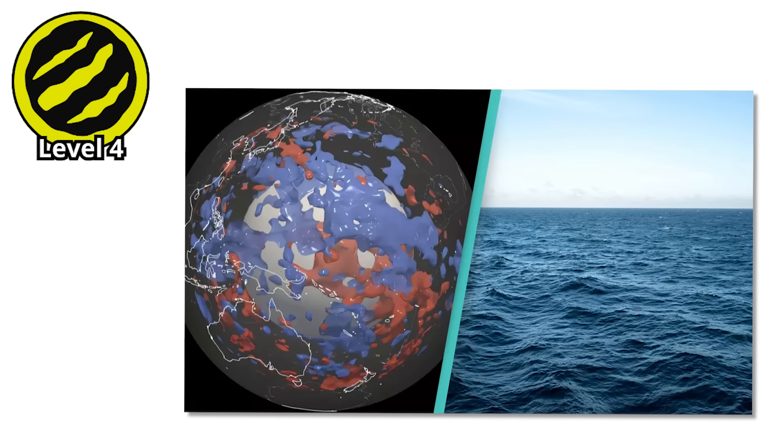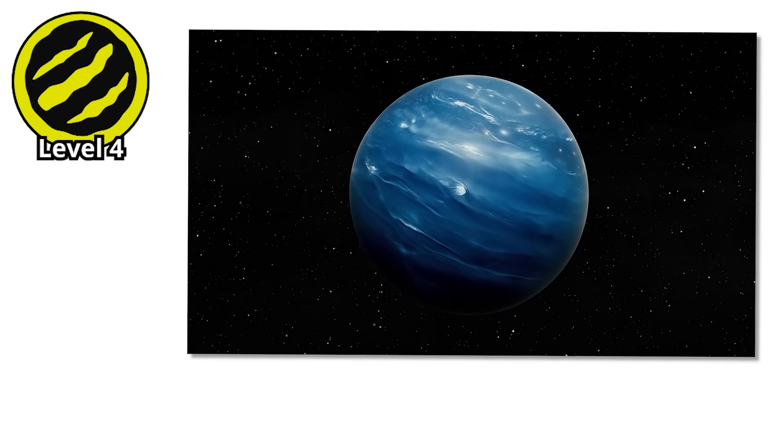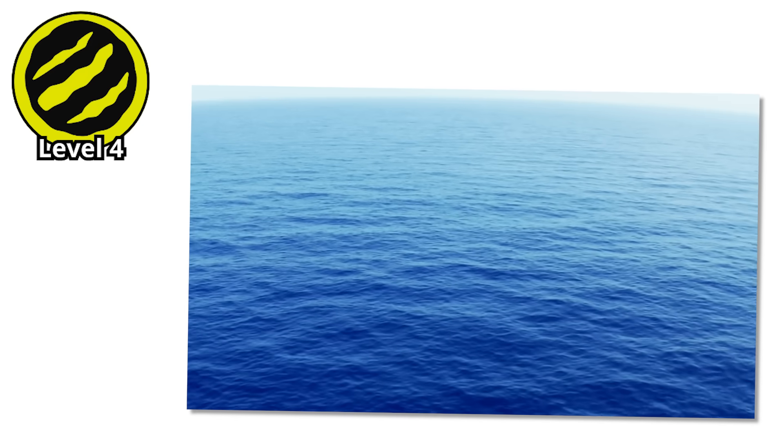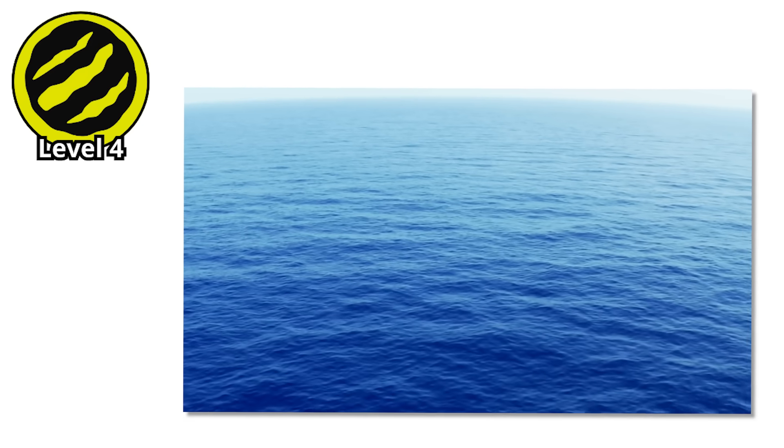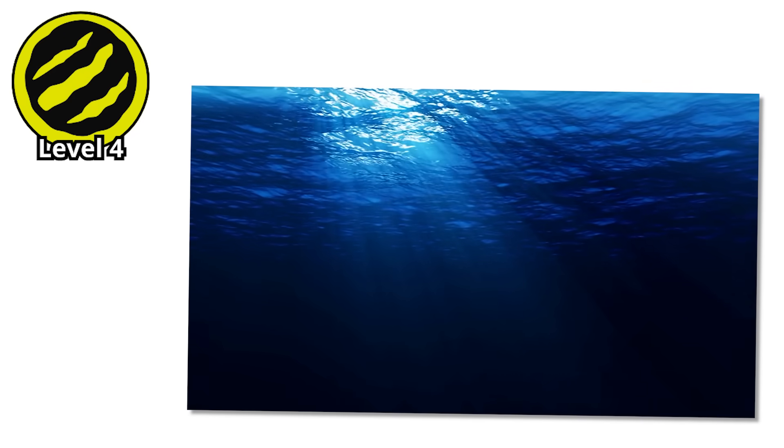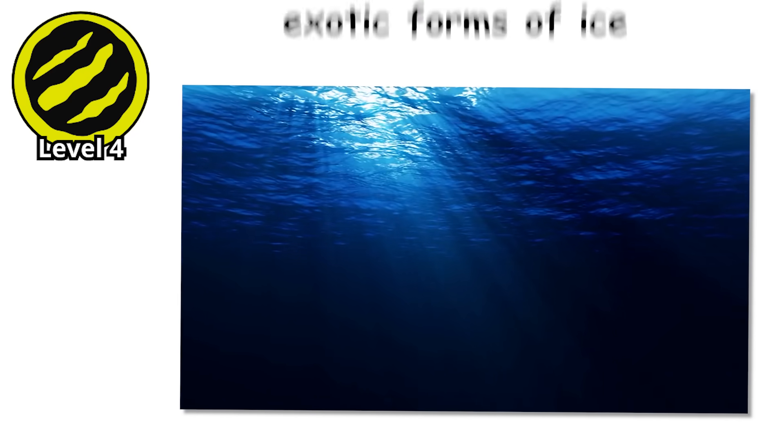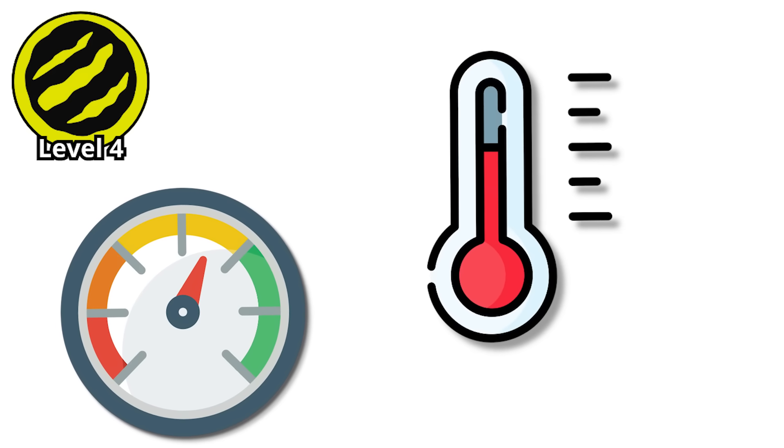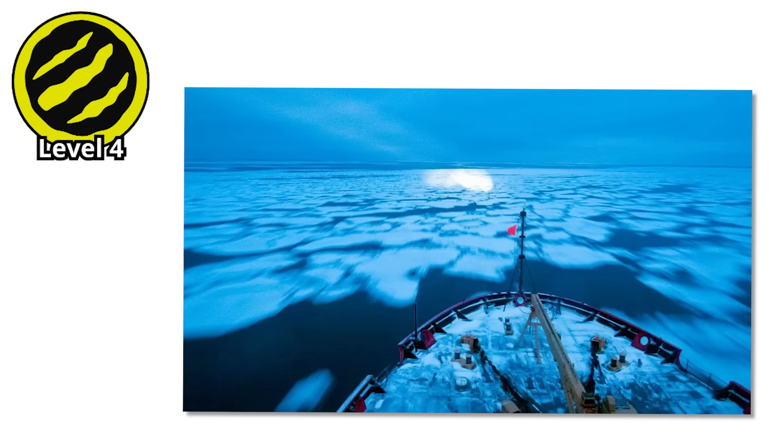And then there's the subset that might be ocean worlds. Planets where the entire surface is covered in liquid water hundreds of miles deep. No continents, no islands, no land whatsoever. Just a global ocean from pole to pole. The pressure at the bottom would be so intense that water would compress into exotic forms of ice that only exist at high pressure and high temperature simultaneously. Hot ice sitting at the bottom of an ocean.